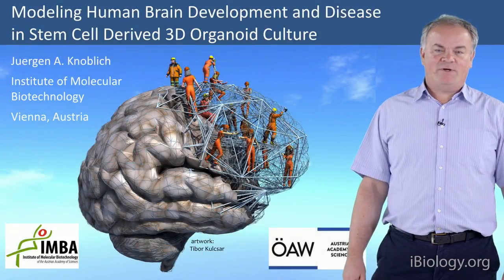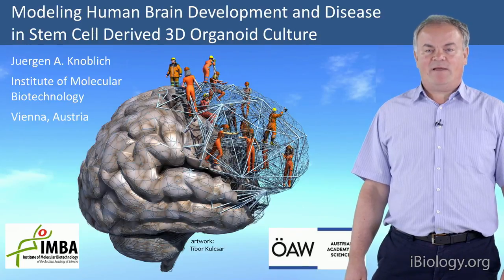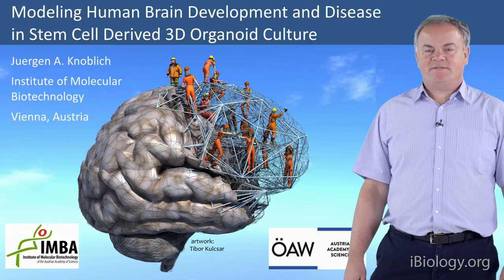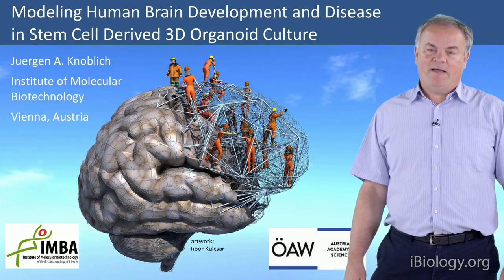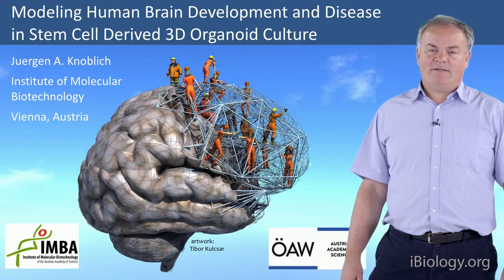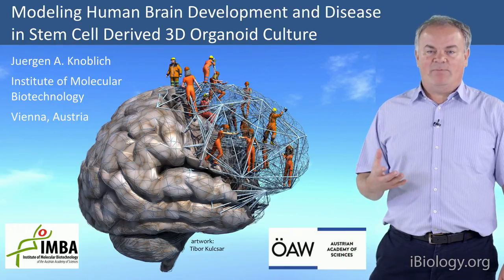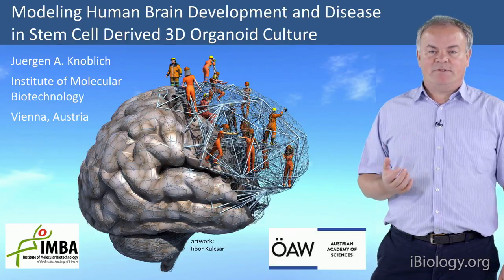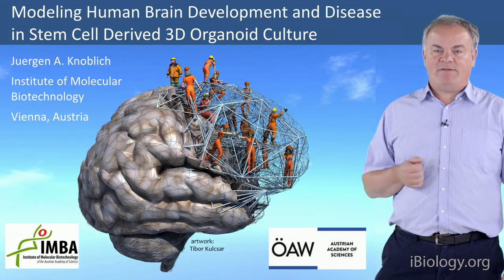Hello. My name is Jürgen Knoblich. I am a scientist at the Institute of Molecular Biotechnology of the Austrian Academy of Sciences in Vienna. And in this second part of my lecture, I would like to tell you about how we can recapitulate human brain development in the lab, starting from pluripotent stem cells using three-dimensional culture methods.